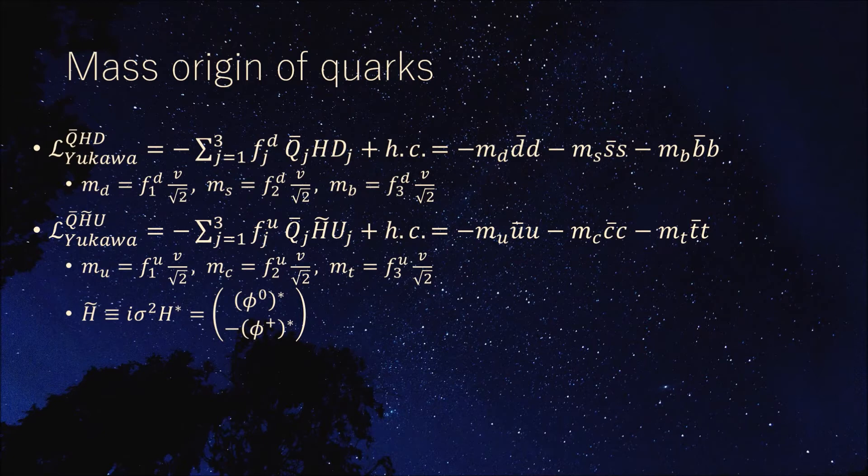Let's start with the quark mass generation mechanism. What plays an important role is the SU3 cross SU2 cross U1Y invariant Yukawa interaction consisting of quark fields Q, D, and Higgs field H. Here, H.C. is an abbreviation for the hermitian conjugate term of the first term on the right side. F is called the Yukawa coupling constant and is a quantity that expresses the strength of the coupling between the Higgs field and the Fermi field. By replacing the Higgs field H with the vacuum expectation value in the Yukawa interaction, the mass term for the down type quark can be obtained. Since the expected vacuum expectation value V over square root 2 of the Higgs field is common, the mass M is proportional to the Yukawa coupling constant F. From this property, it can be seen that the heavier the quark, the stronger the bond with the Higgs field.